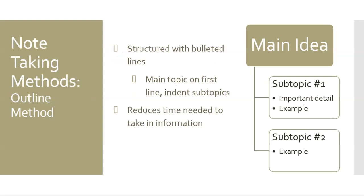The first of the popular note-taking methods is the outline method, which is made by using bulleted lines in your notebook. The main topic would be on the first line, and subtopics — topics under the umbrella of the main topics — are written on lines underneath that have been indented. Further detail into subtopics would be indented even farther out. The setup looks like opening folders within folders on your computer. The visual spacing of the outline method lets you take in your notes more quickly.